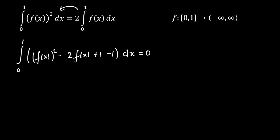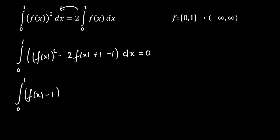Now I am going to make a perfect square using these three terms. So we will get the integration from 0 to 1 of (f(x) minus 1) whole square, dx. Now I am going to take this minus 1 on the other side with the integration. So we will get integration from 0 to 1 of 1 dx, which equals 1, as it is a difference of limits.